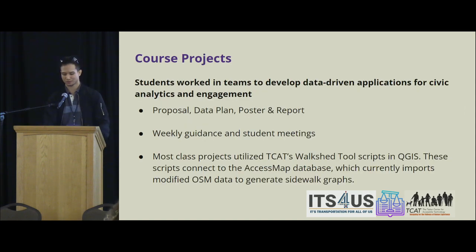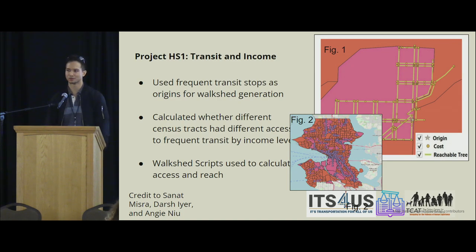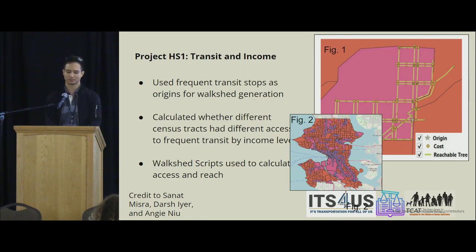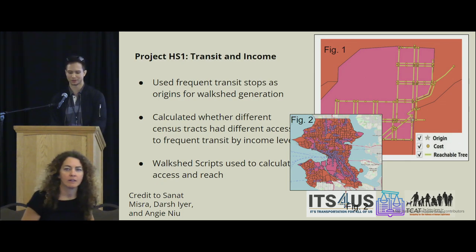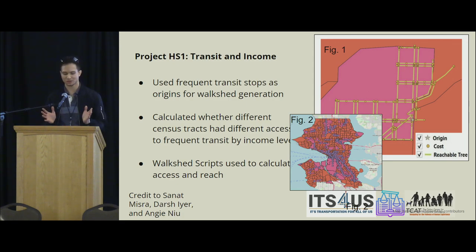We'll take a look at a few of the projects that the students worked on. The first is a transit income project where students used Walksheds to analyze how far frequent transit stops were from people in low-income areas, using our Walkshed scripts to calculate whether census tracts had different access to frequent transit lines.